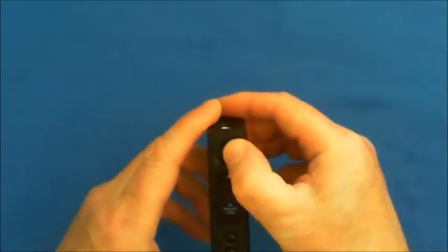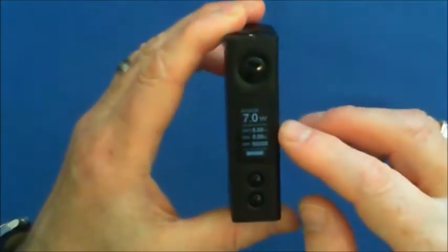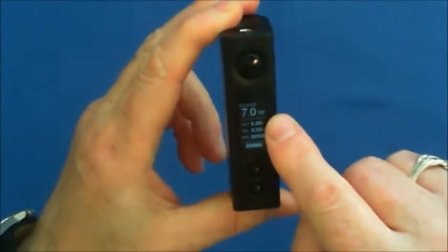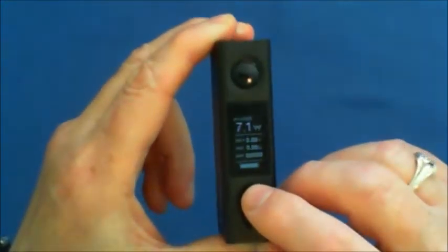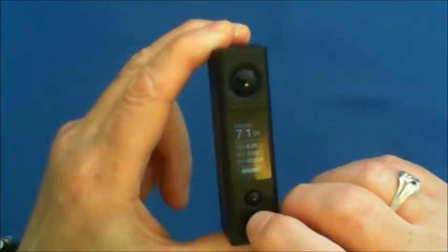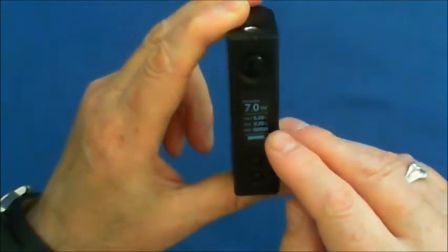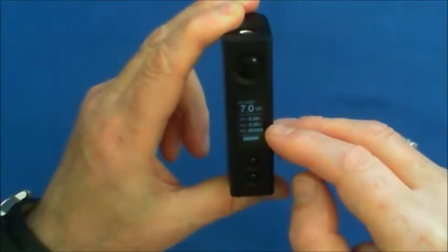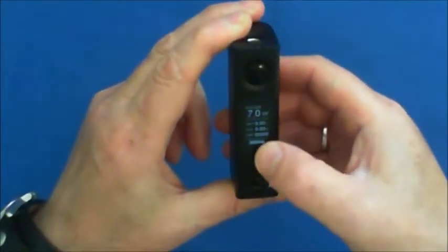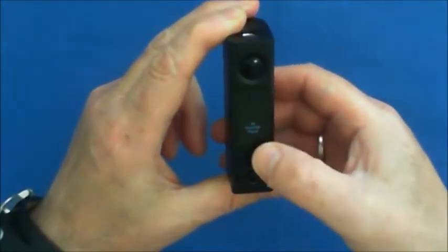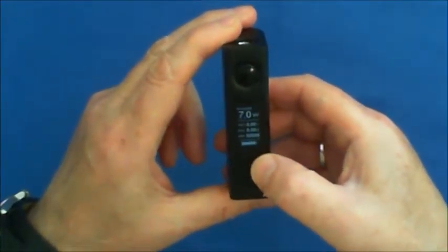You switch it on and it comes up with your wattage there, and you can change that by pressing these buttons here. You also get what atomizer you're using and you also get the voltage.